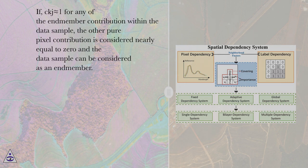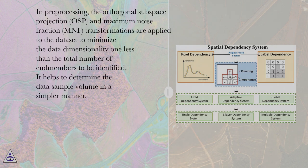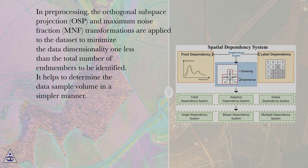If C_kj equals 1 for any of the N-member contributions within the data sample, the other pure pixel contributions are considered nearly equal to 0, and the data sample can be considered as an N-member. In preprocessing, the Orthogonal Subspace Projection (OSP) and Maximum Noise Fraction (MNF) transformations are applied to the dataset to minimize the data dimensionality to one less than the total number of N-members to be identified. This helps to determine the data sample volume in a simpler manner.